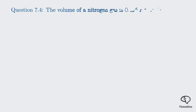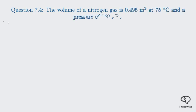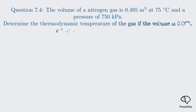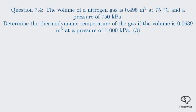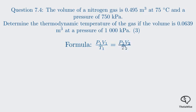We've reached our final question, 7.4. The volume of nitrogen gas is 0.495 m³ at 75°C and a pressure of 750 kPa. We must determine the thermodynamic temperature of the gas if the volume is 0.0639 m³ at a pressure of 1000 kPa. This involves pressure, volume, and temperature, governed by the combined gas law: P₁V₁/T₁ = P₂V₂/T₂.